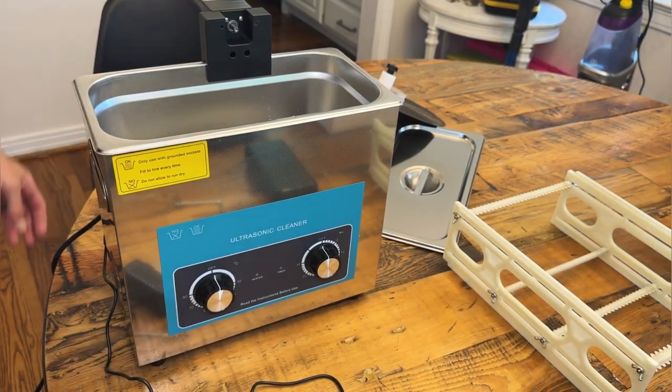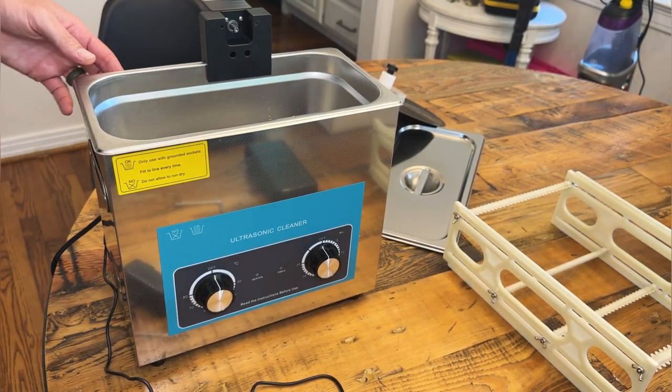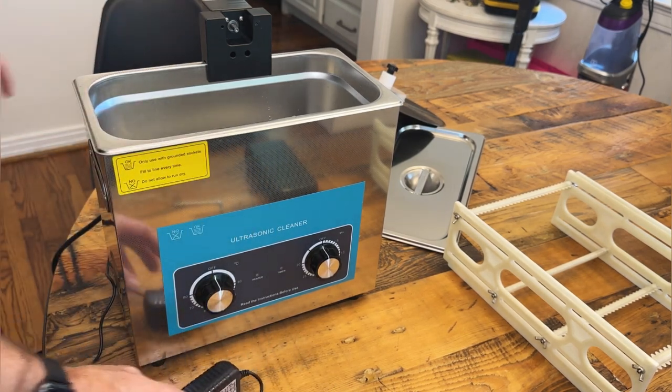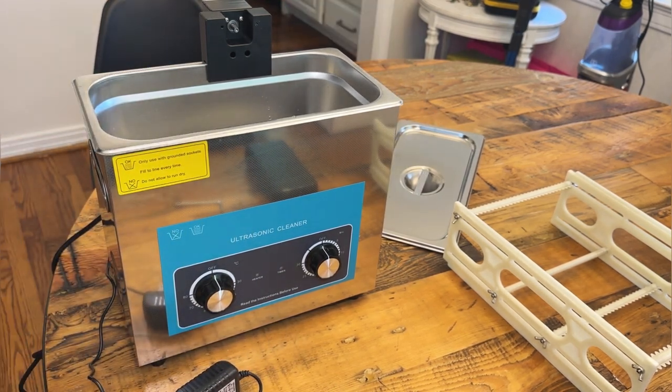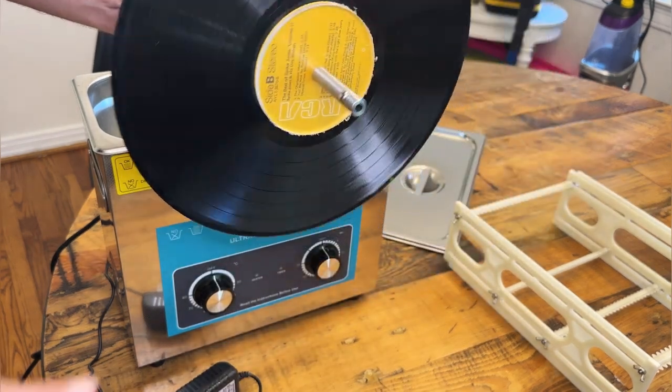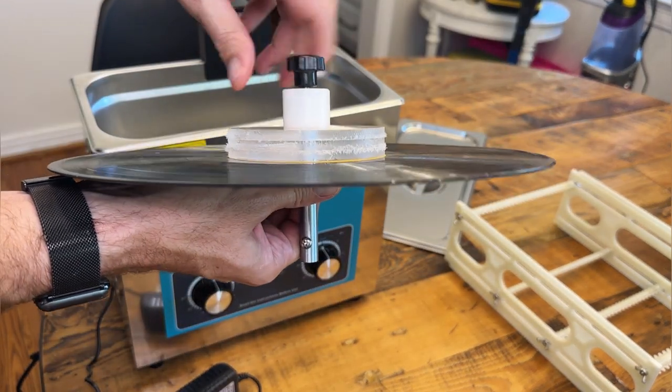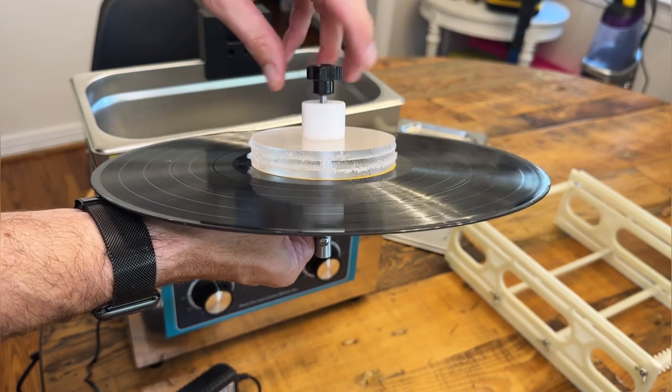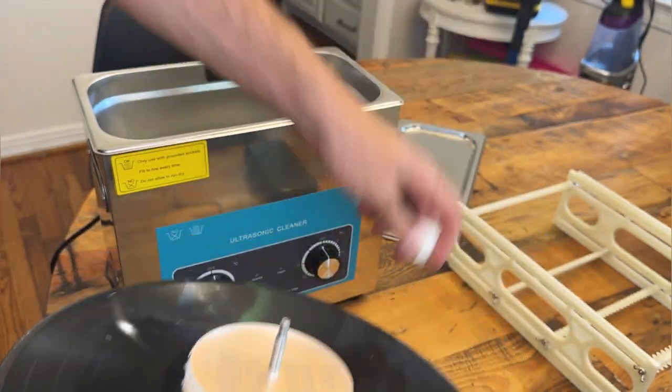So this is our unit here. Comes with a main plug for the sonic piece and then an additional plug. This is our record turner. You can see that we have the record adapter right here and it's really simple to use. You're just gonna thread off the locking piece and the nut.